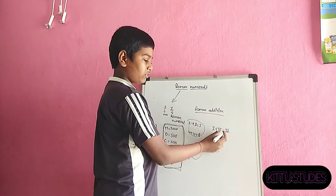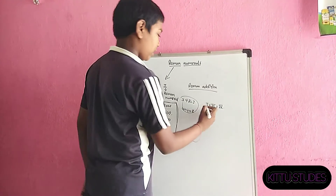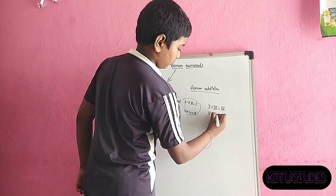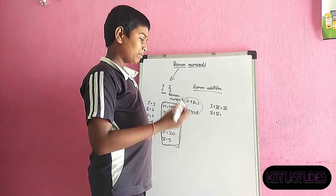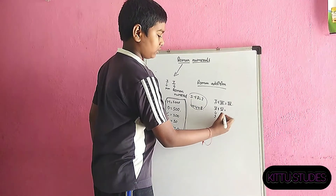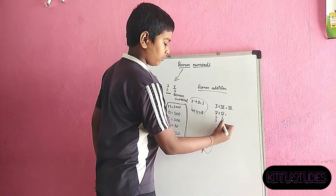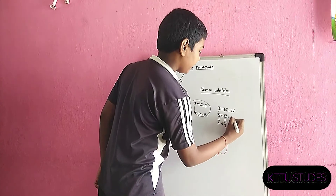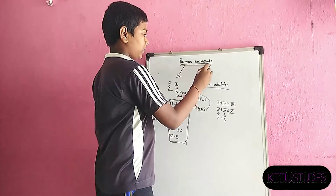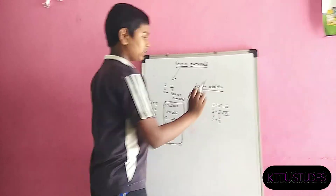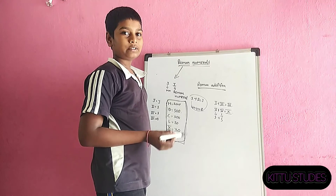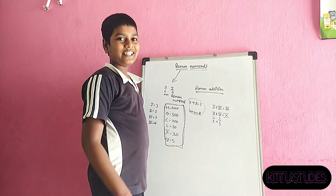It becomes four — I, V. And next, V plus V means V means five, so 5 plus 5 is 10, which is X. Like this, these are Roman numerals and Roman addition. Thank you for watching this video, do subscribe, see you in the next video.